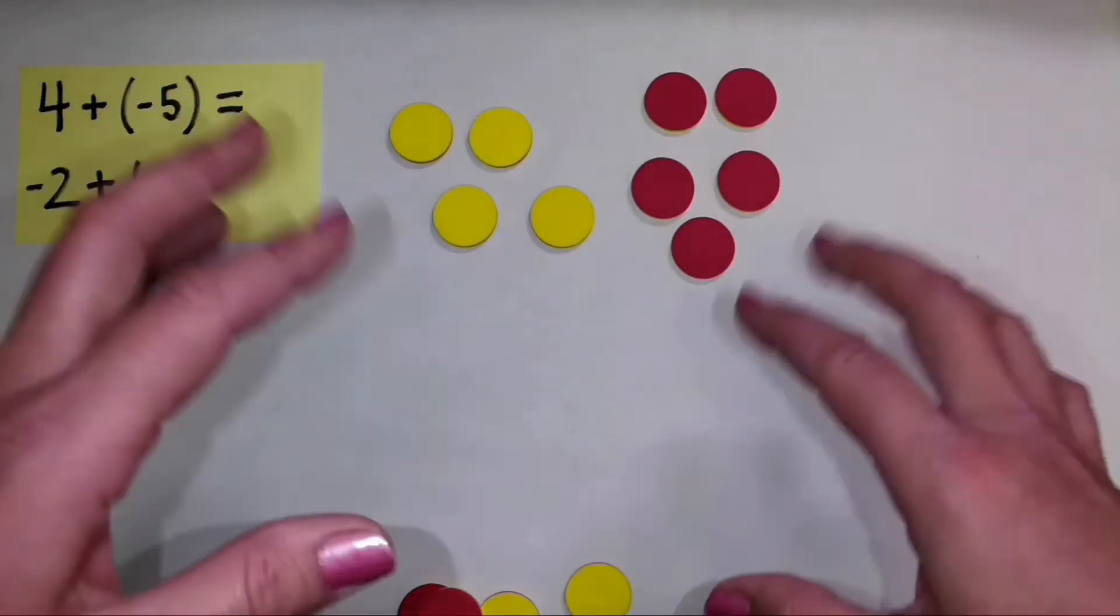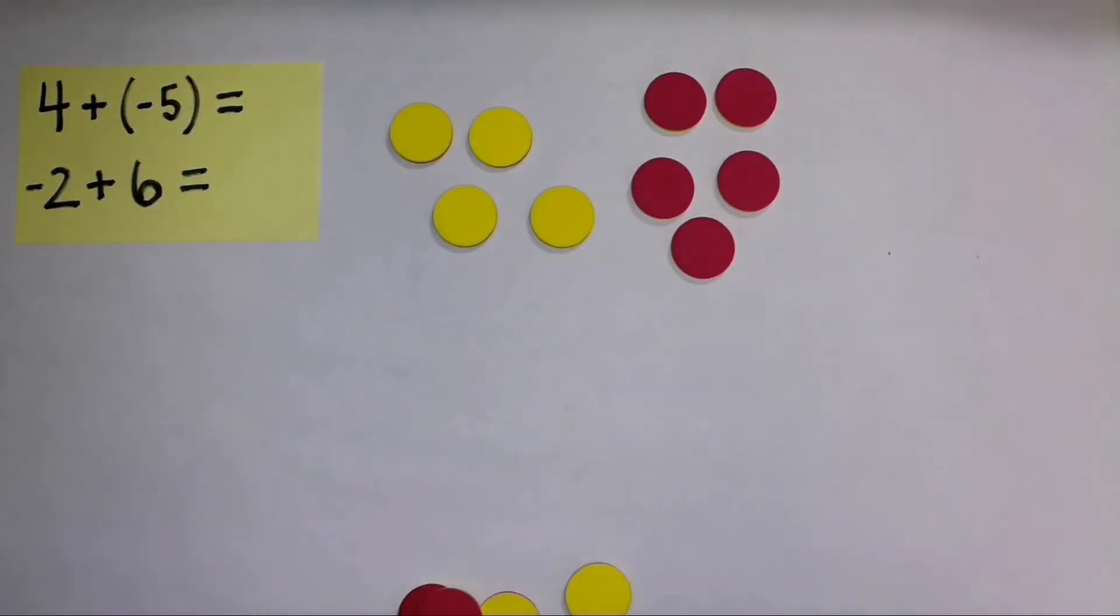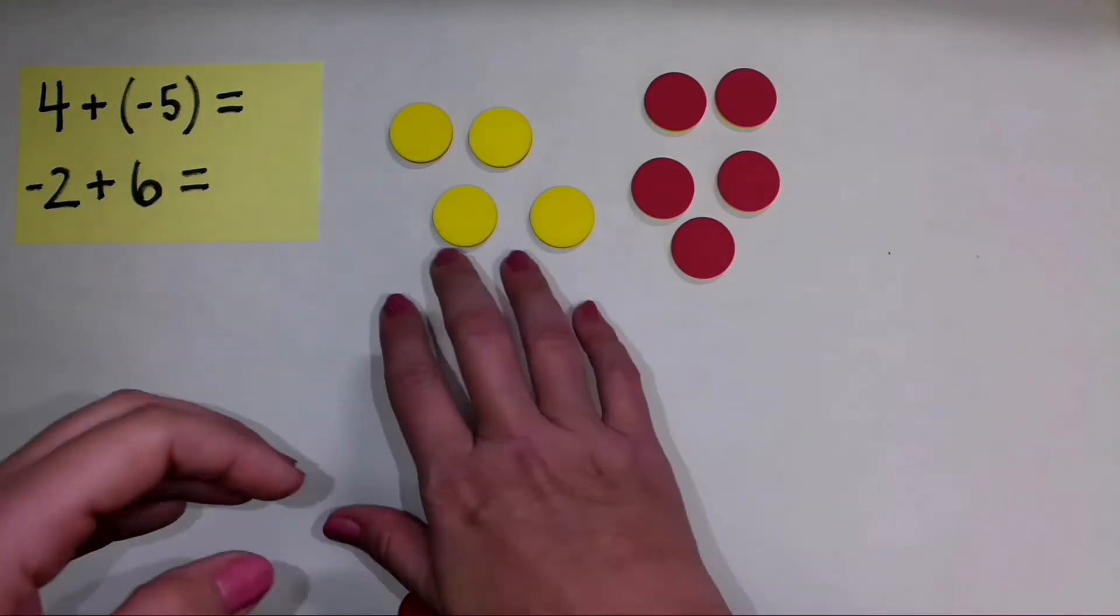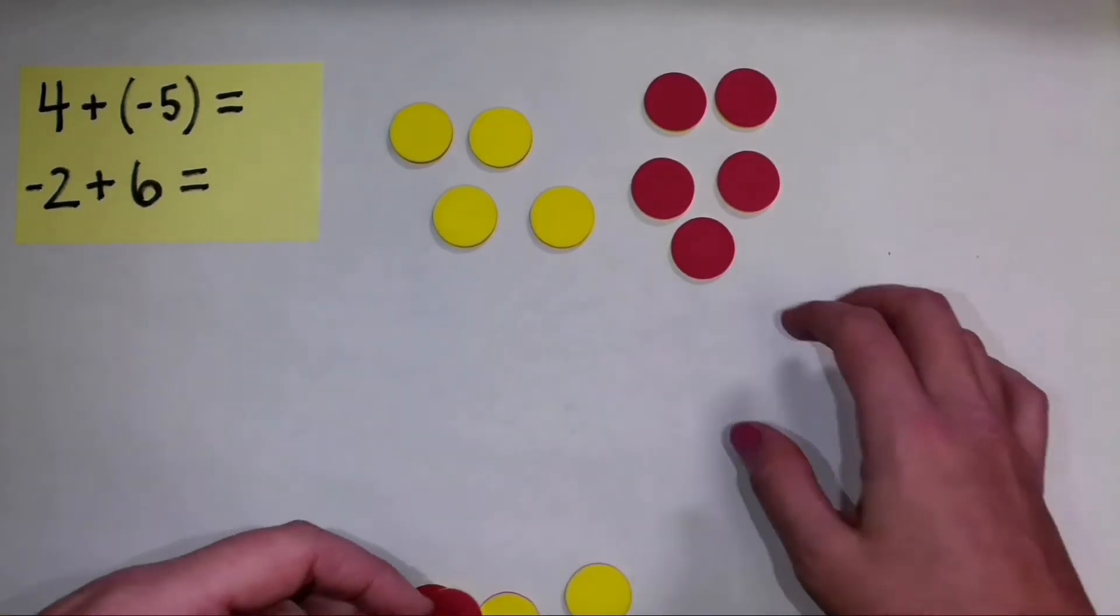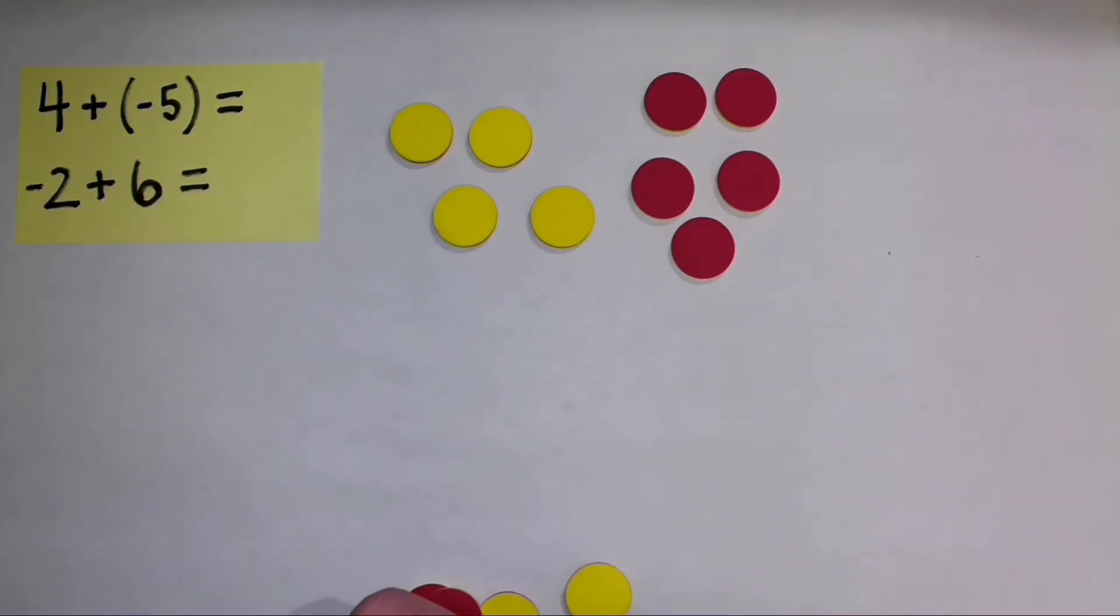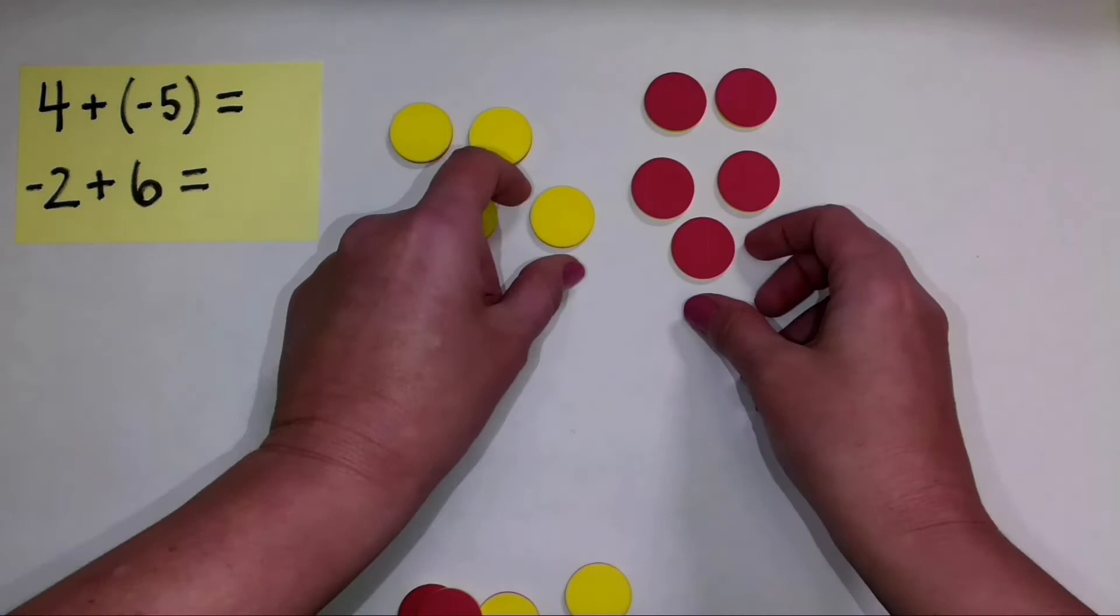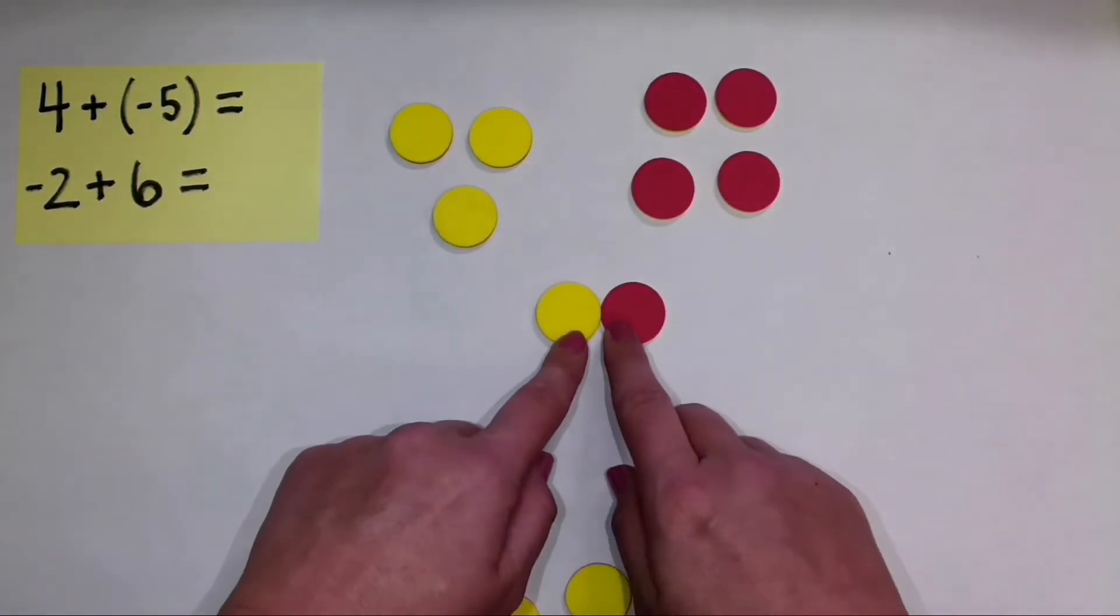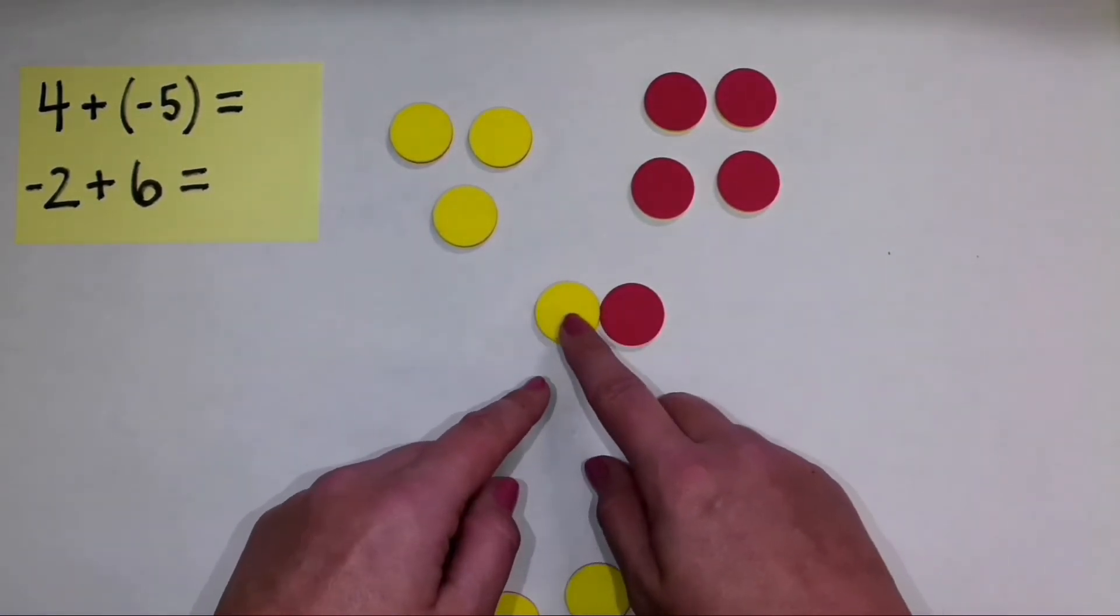Now I am not finished with this problem because I have to figure out the sum. And in order to do that, I'm going to get one of the sides of this problem, either the positive side or the negative side. I want that side to equal zero. So what we use here is we use zero pairs. If I have a positive and a negative, those equal zero. They are a zero pair.